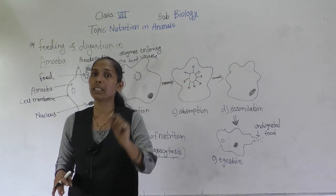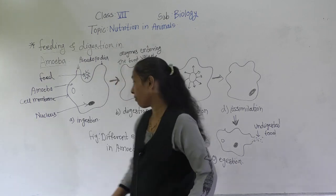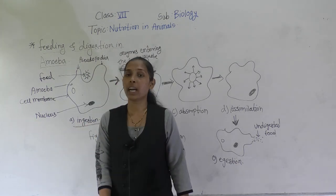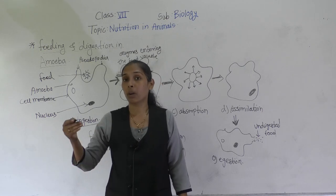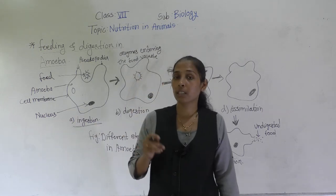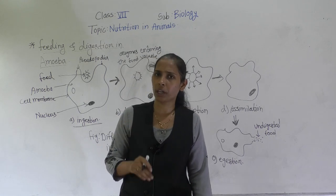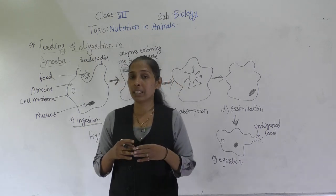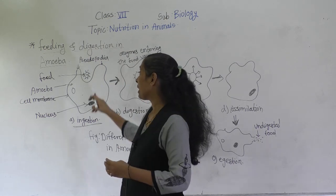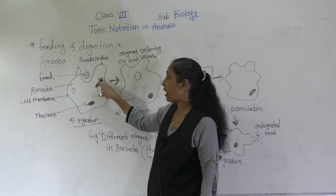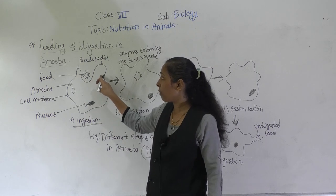The first process in digestion of amoeba is ingestion. Amoeba is a microscopic, unicellular organism, and its food consists of tiny microscopic organisms or plants. Whenever it senses microscopic organisms or plants near it, it starts to make projections around that food — finger-like pseudopodia form around the food particle.